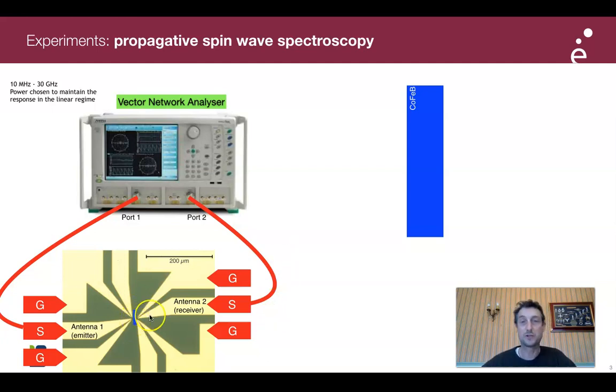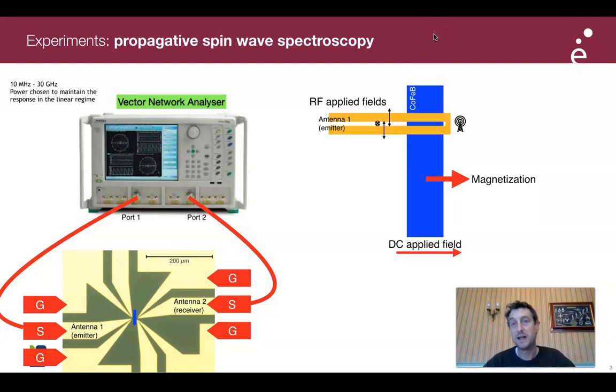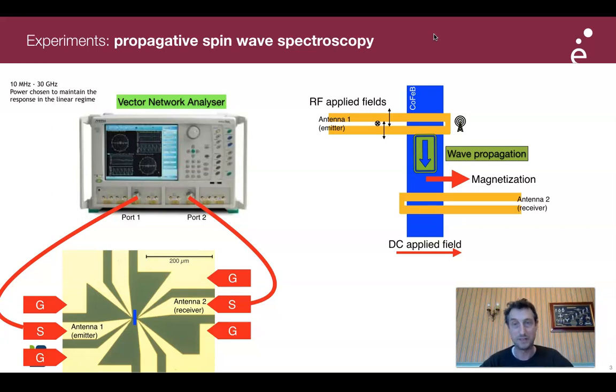The core of the device is this blue magnetic stripe made of 30 nanometer of cobalt iron boron. What we do is apply a strong field to magnetize it in the transverse direction, and we define RF antennas on top in which we flow RF current to generate RF fields and generate spin waves that propagate to the receiving antenna.